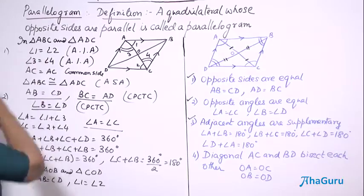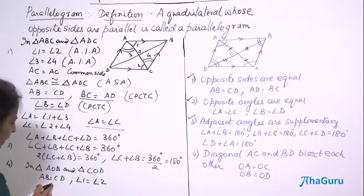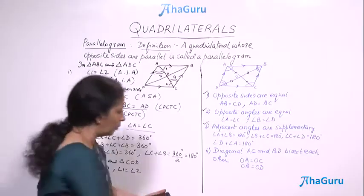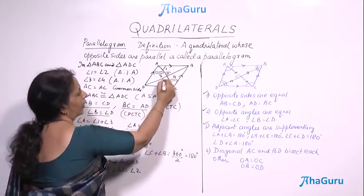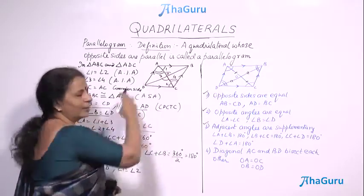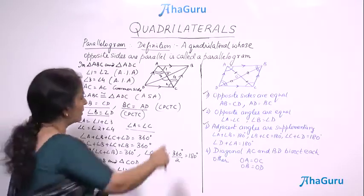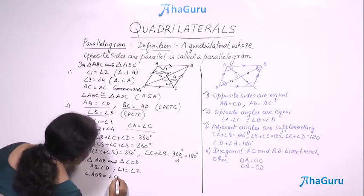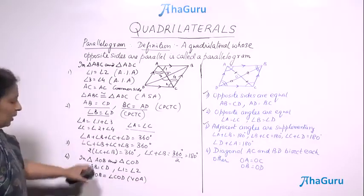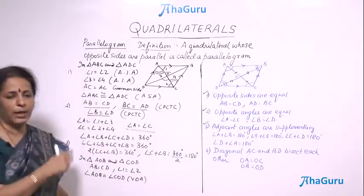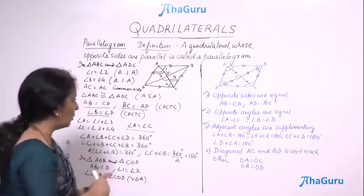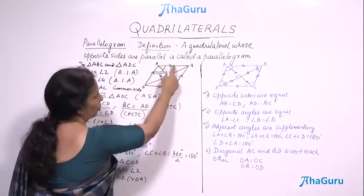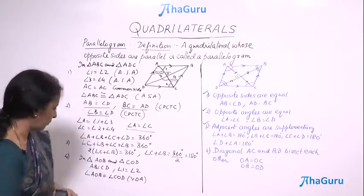Let me mark the angles: angle 1, angle 2, and angle 3. In triangles AOB and COD: I know AB equals CD, which was already proved. Also, angle 1 equals angle 2 — they are alternate interior angles, nothing new here. I have a side and an angle. I cannot take OA or OB because those are what I need to prove. So I also take angle AOB equals angle COD — they are vertically opposite angles.